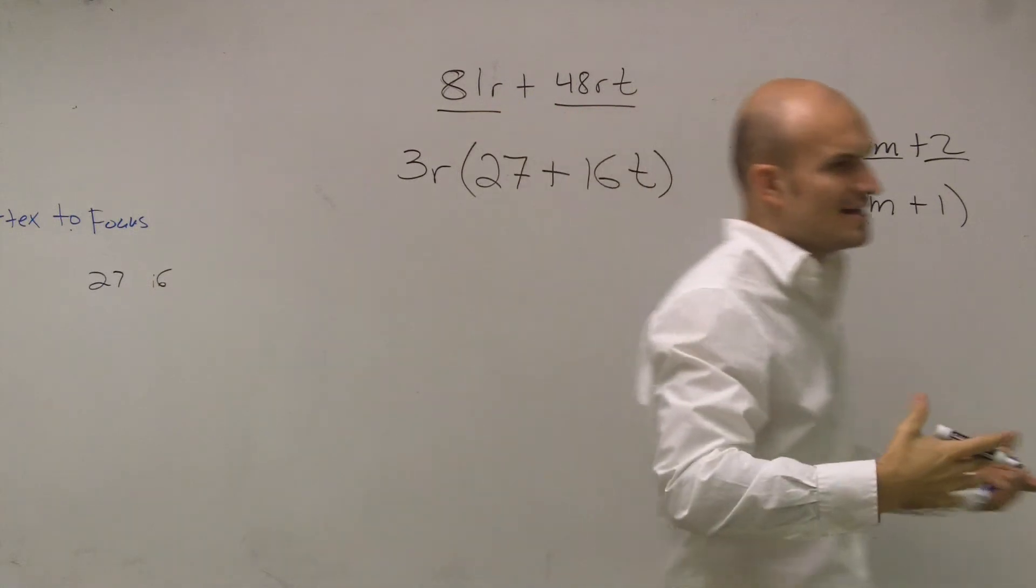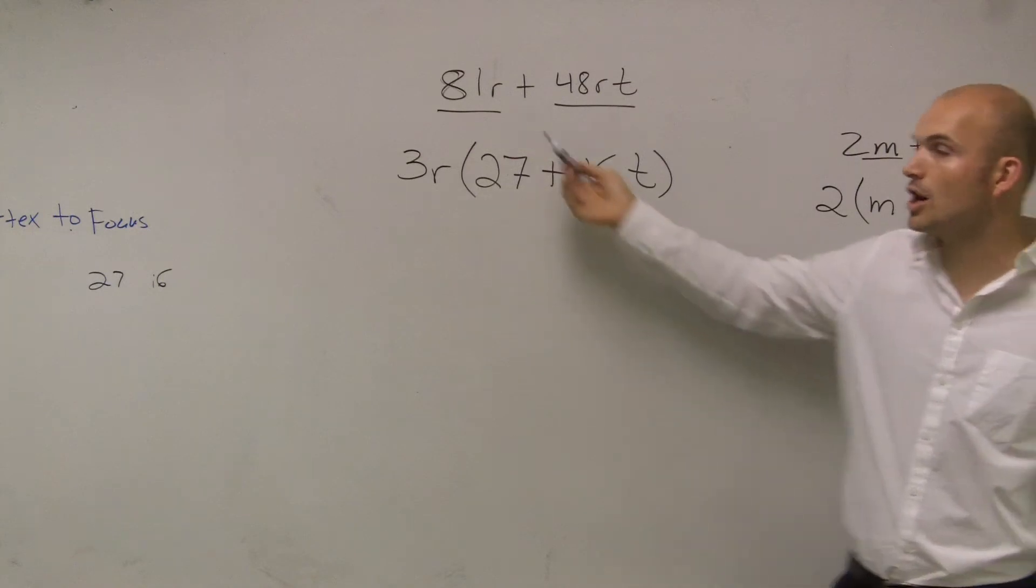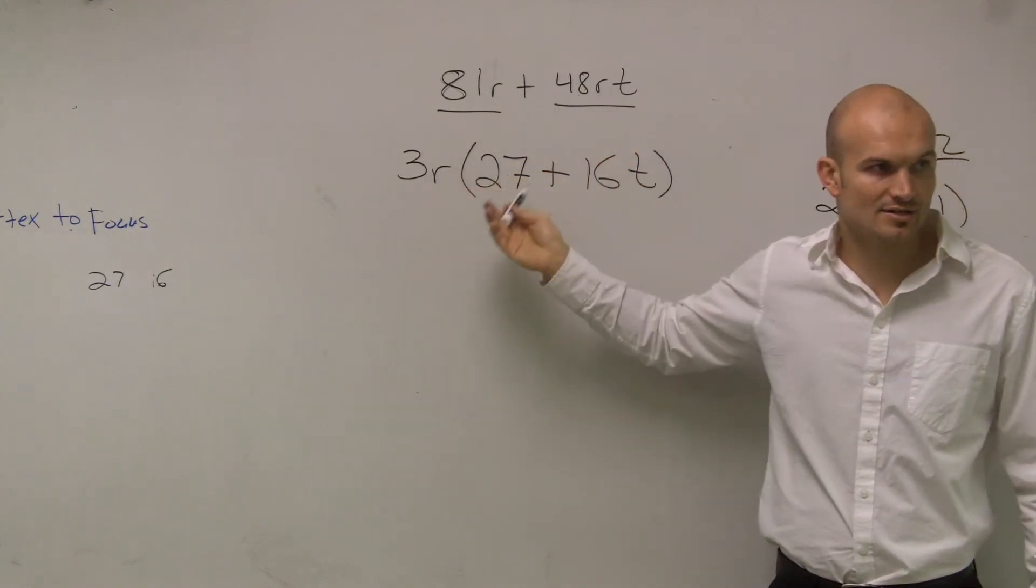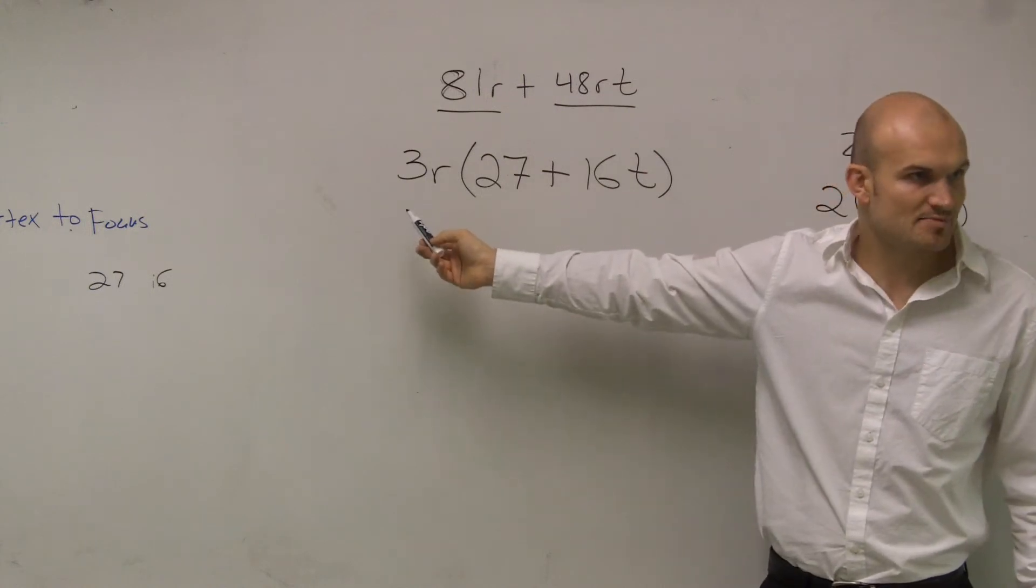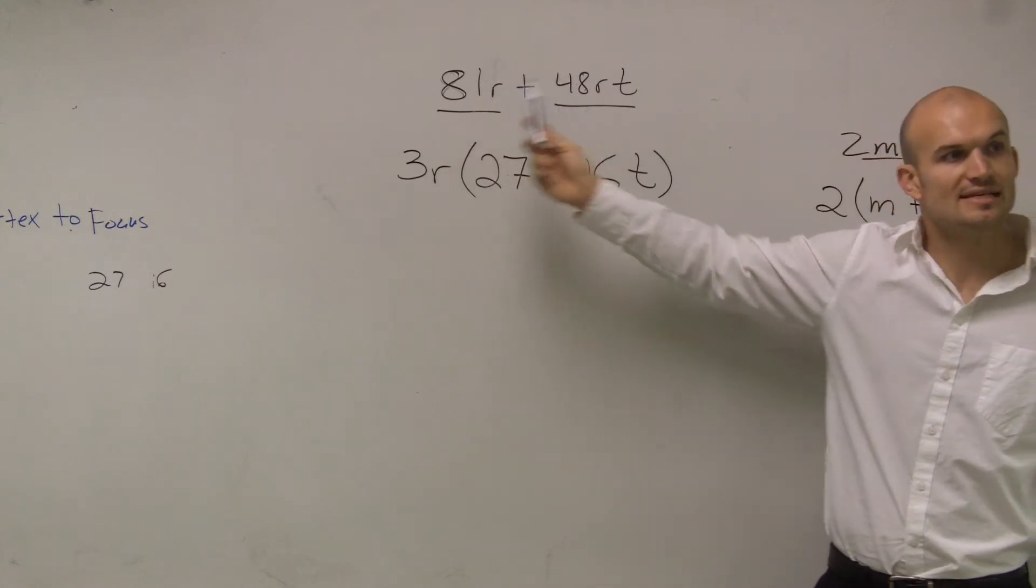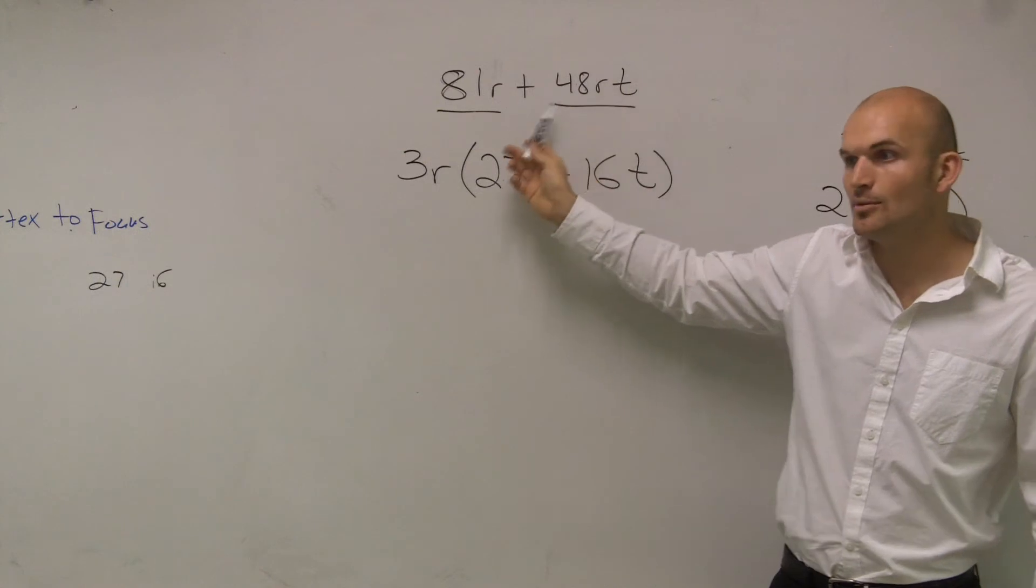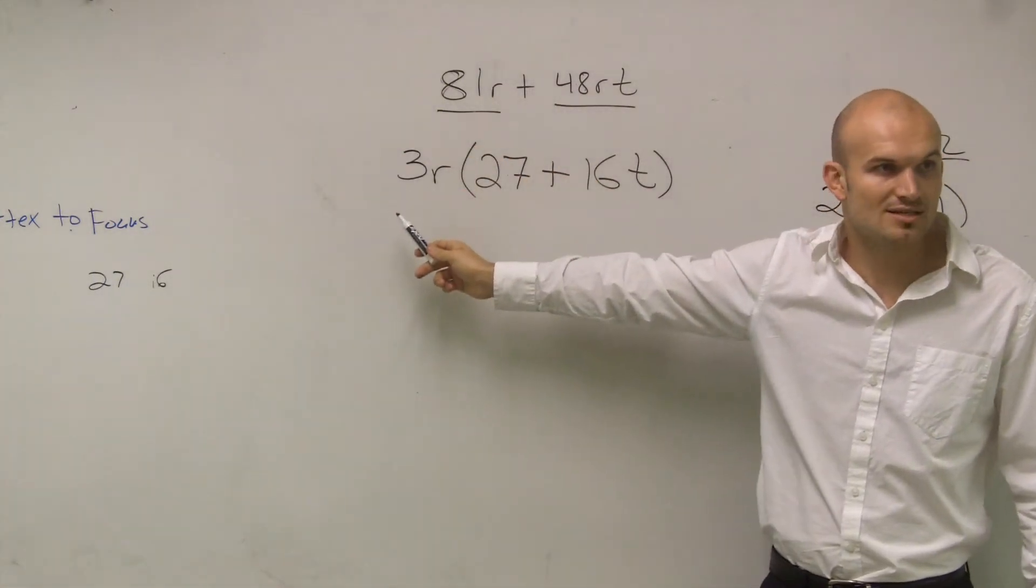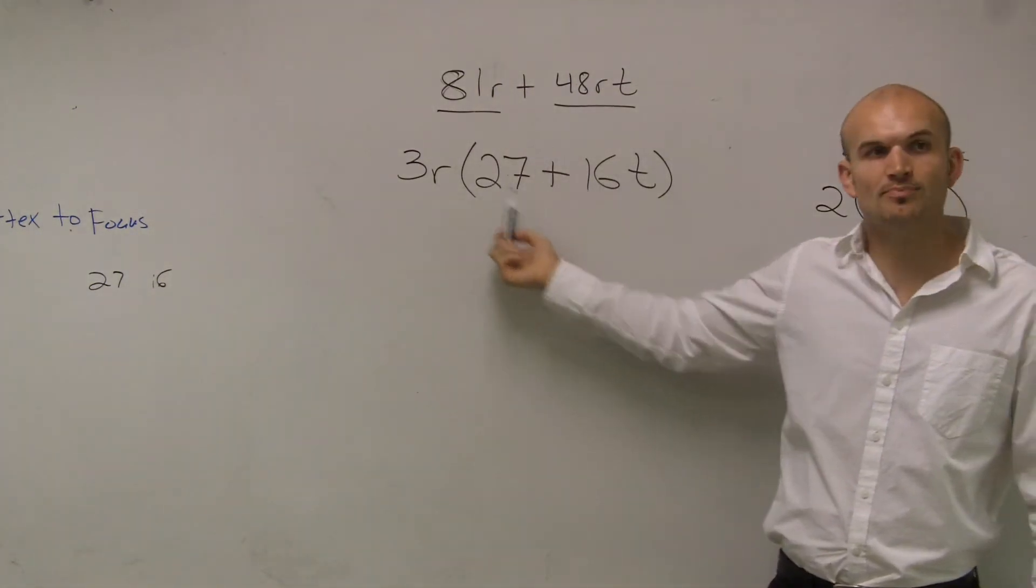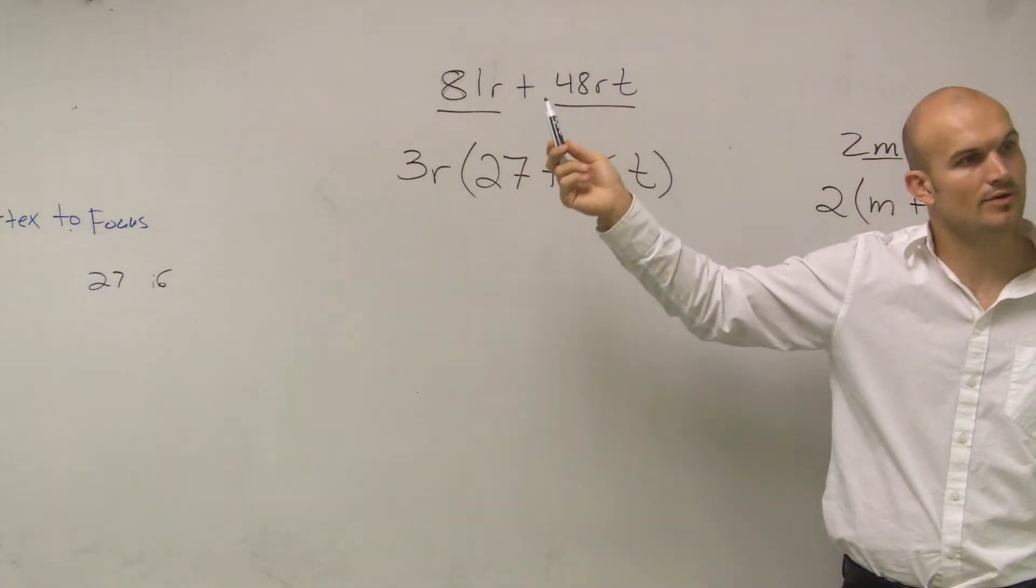Now, you might say, OK, well, you're dividing and then you're getting a multiplication problem. Remember, when we're factoring, our purpose is to write our expression as a product of two factors. 3r was one of our factors, because 3r evenly divides into both of our terms. Since it evenly divides into both of our terms, I can divide both of my terms by 3r. The result is my other factor, 27 plus 16t. When you multiply both factors by each other, you get your original number back in the end.